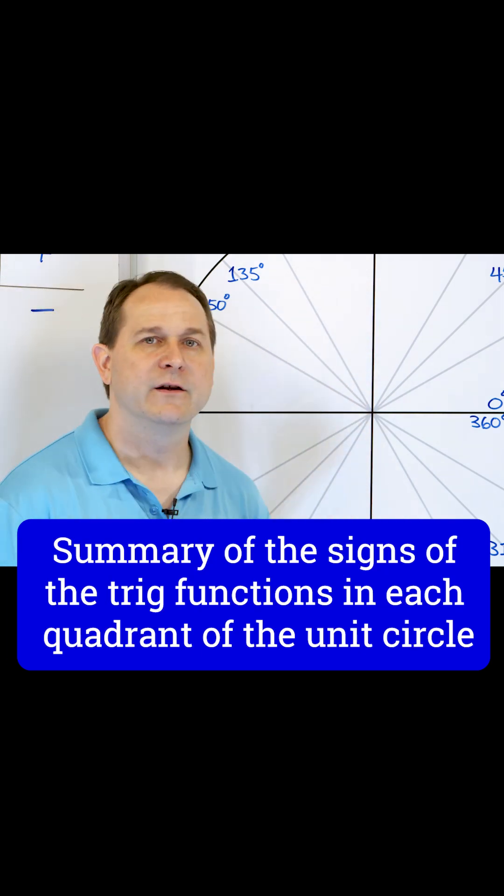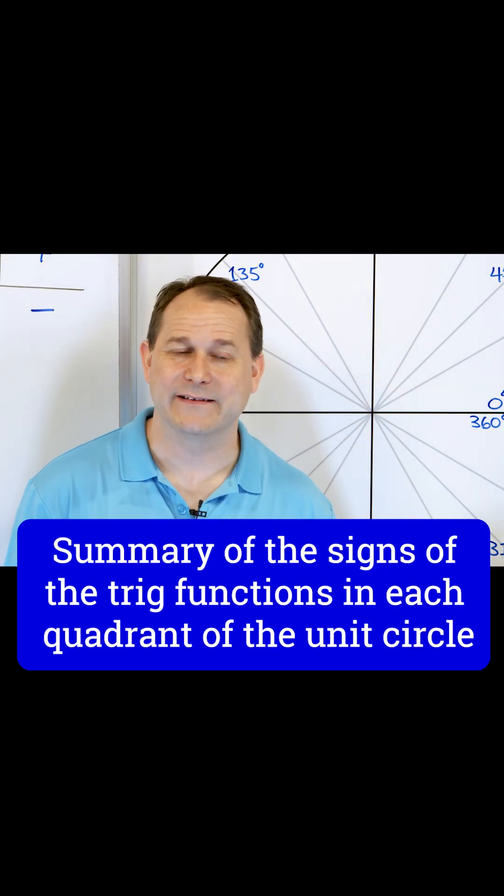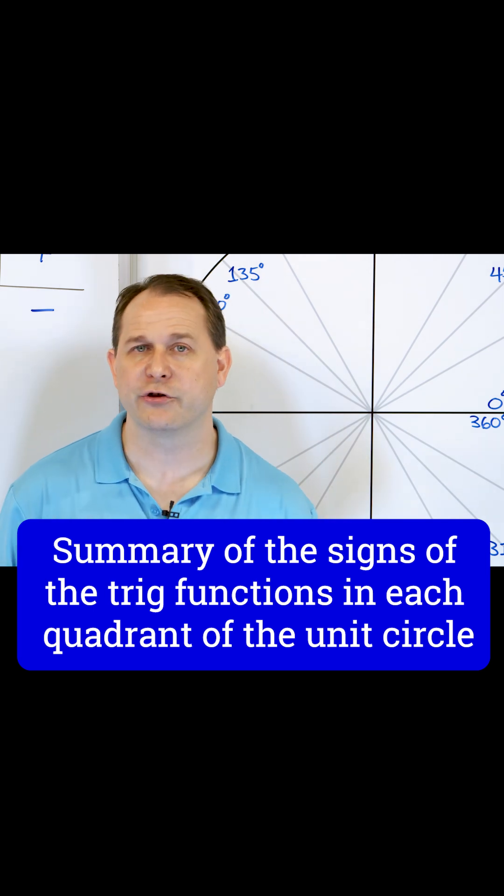Sine is the projection on the y-axis, cosine is the projection on the x-axis. Sometimes it's positive, sometimes it's negative, depending on the quadrant.